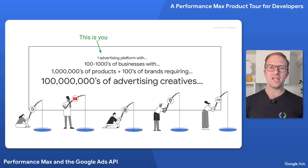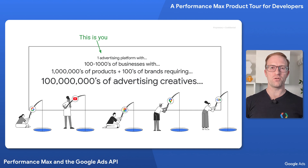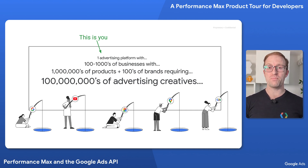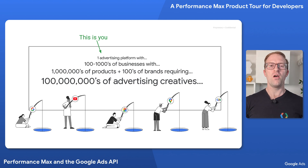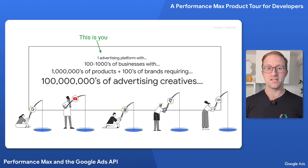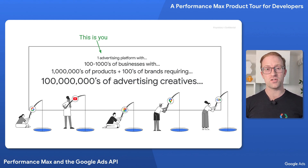Let's say you provide a platform for businesses to advertise their products on Google. Assuming a medium to large business, you might have over a million products and a brand to advertise. For each product, you need media to present the products as ads, such as images, videos, descriptions, and more.